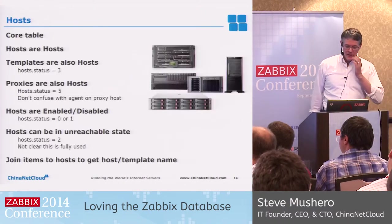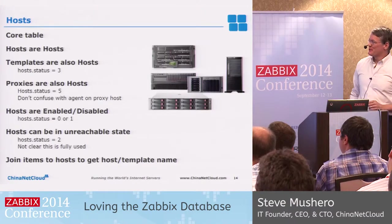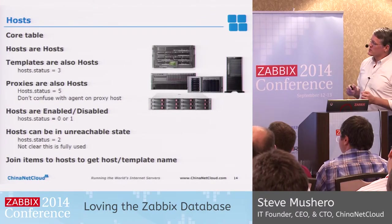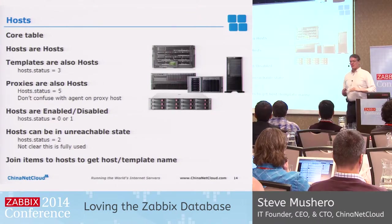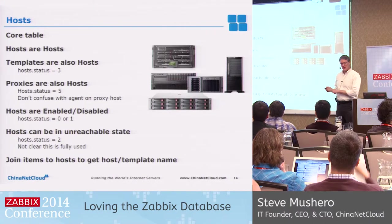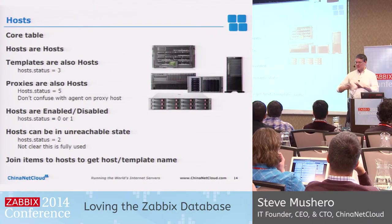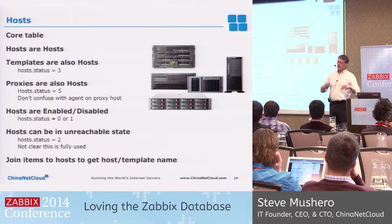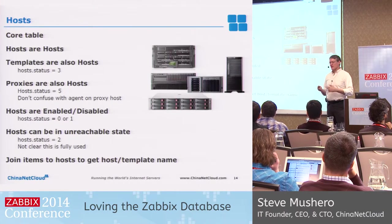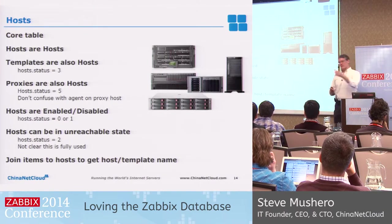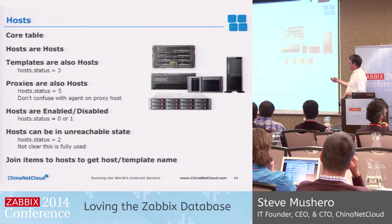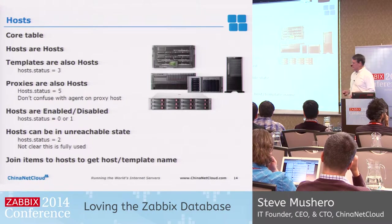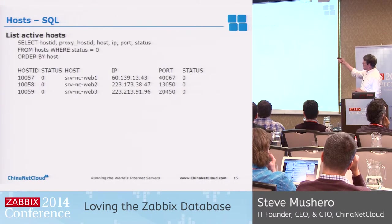Proxies are also hosts — host status 5. Proxies are really part of the Zabbix system; they're really not part of the hosts, but they're kind of in the same table. This is even more complicated because we monitor our proxies, so our proxies are in the host table twice — once as a monitored host and once as a proxy. So if you do things by name, this screws you up. You can list active hosts very simply: where status equals zero.